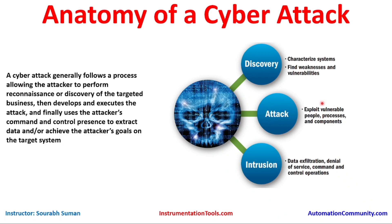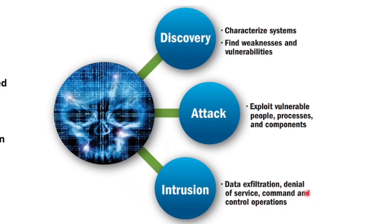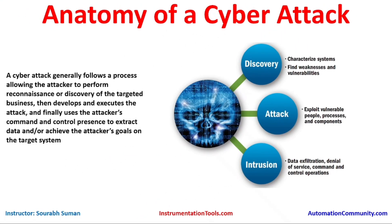Once initial access is done and the attacker has a foothold in the plant network, they start data exfiltration, denial of service, or command-and-control operations — taking command of the plant, issuing commands to devices, changing feedback, and changing alarms. We need to understand what types of intrusion, attack, and discovery technologies are being used by attackers, and define what technologies we can implement to safeguard against all these things. That is all about cyber security. Thank you.